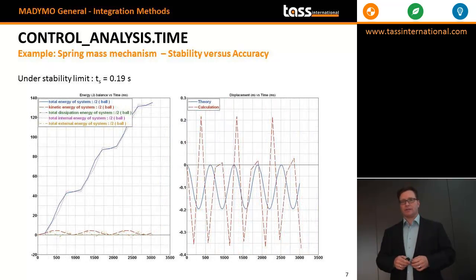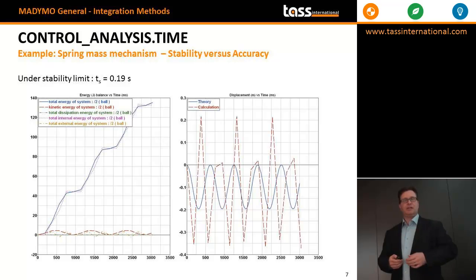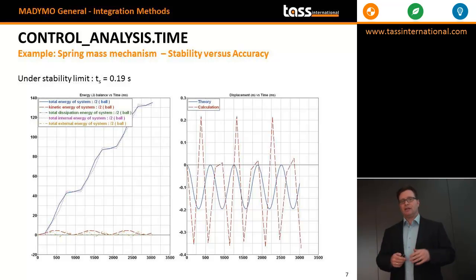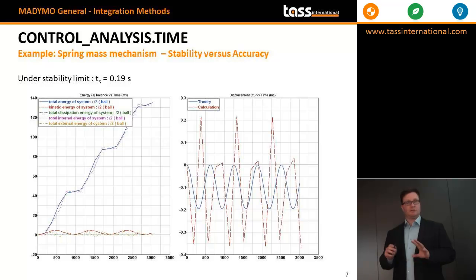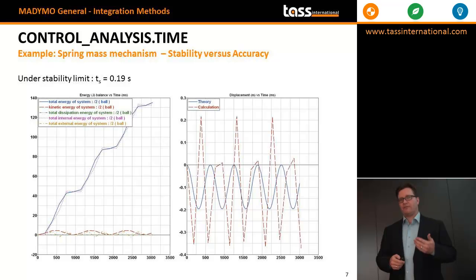So what happens if we lower the time step below the stability boundary? We can clearly see that now the displacement of the mass is at least bounded — it's far from accurate, but it's still bounded, and the total energy drifts but is no longer tending to very large values. This is an indication that the time step is too large but the calculation is stable. As a user you should now lower the time step further to make sure that the calculation becomes accurate.